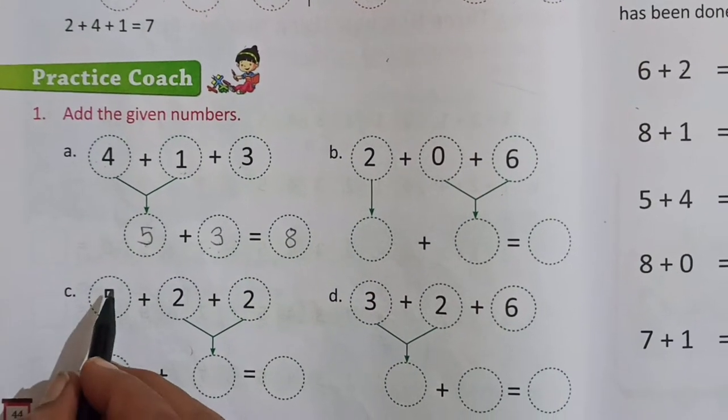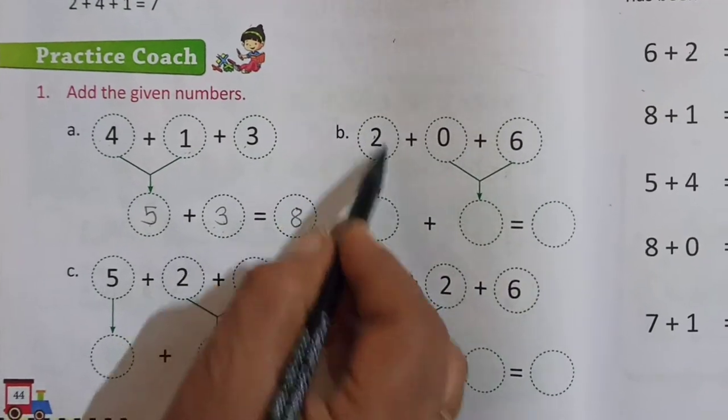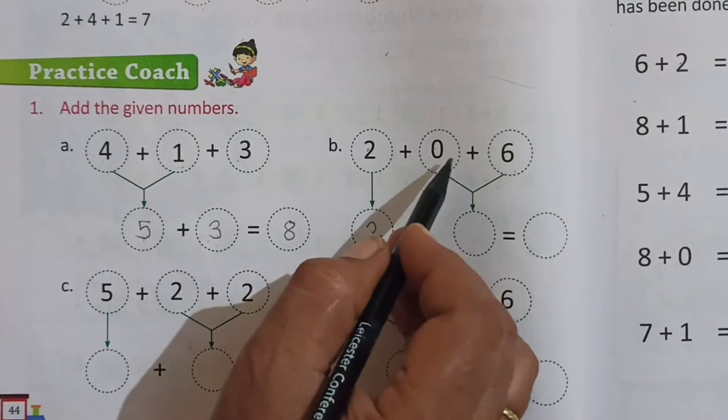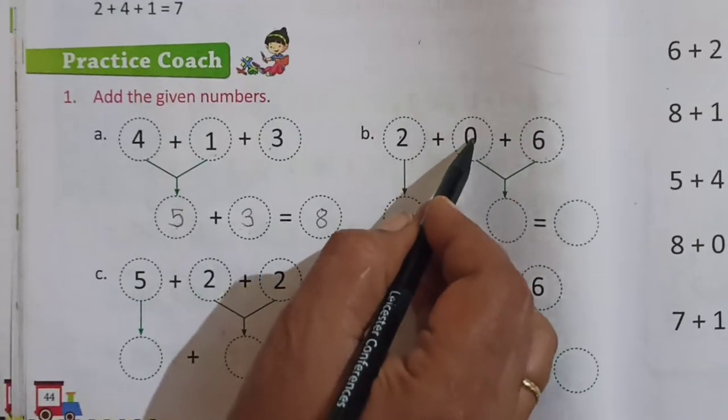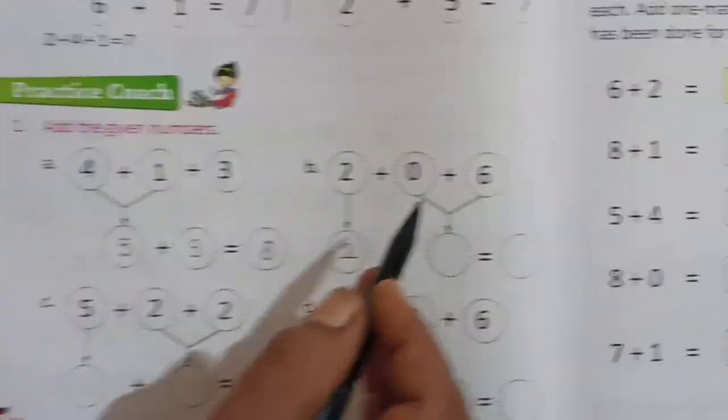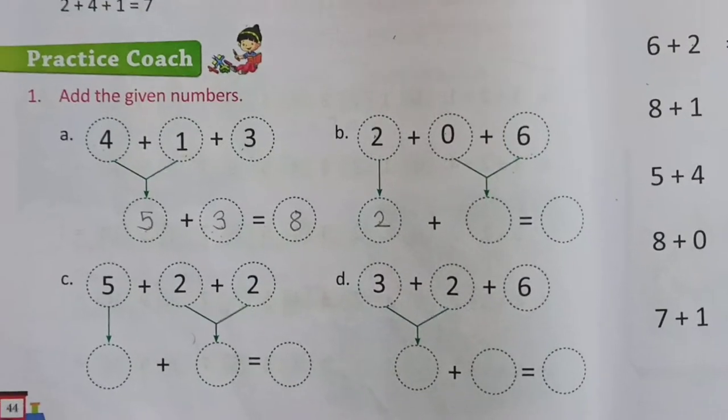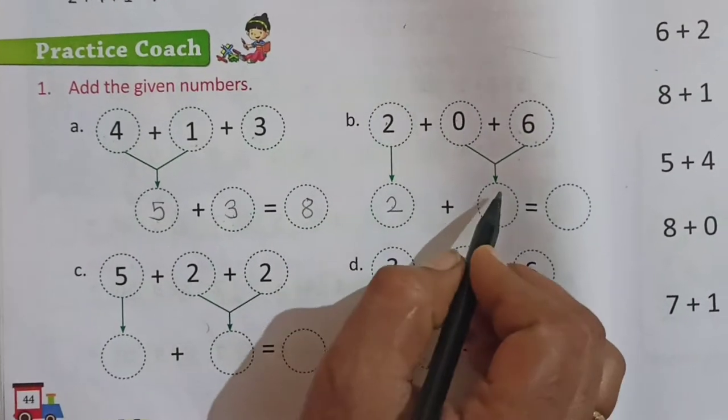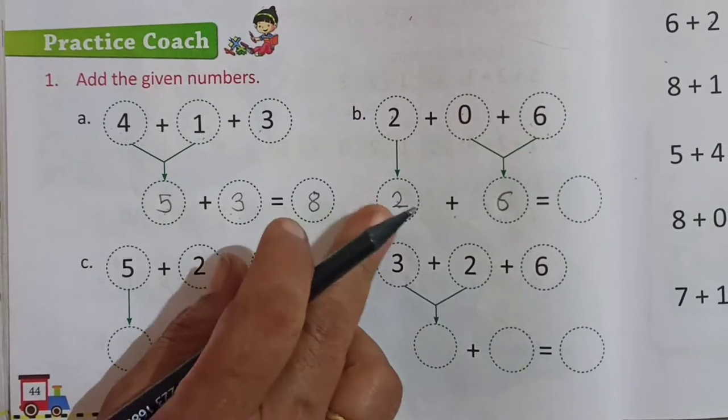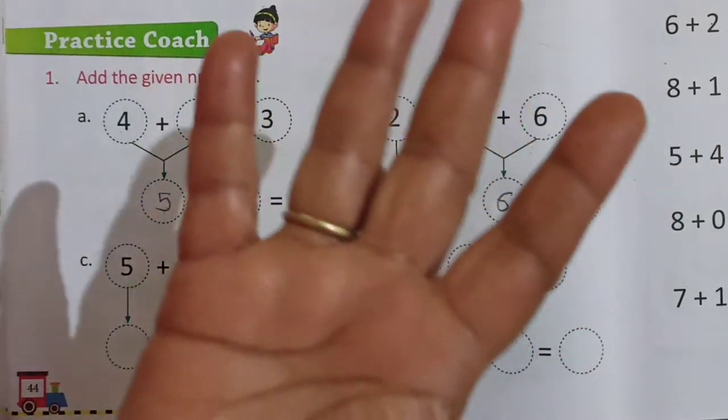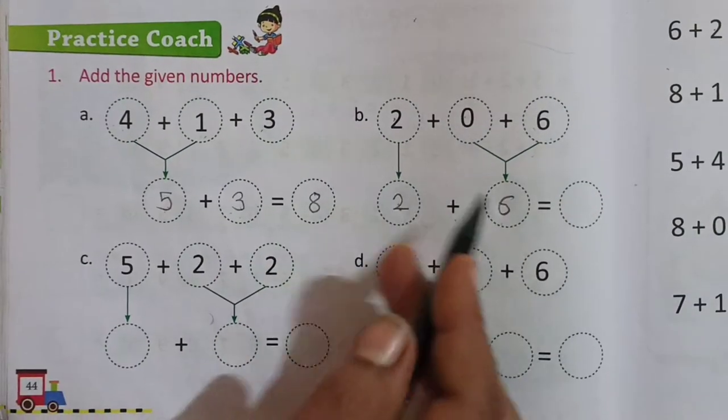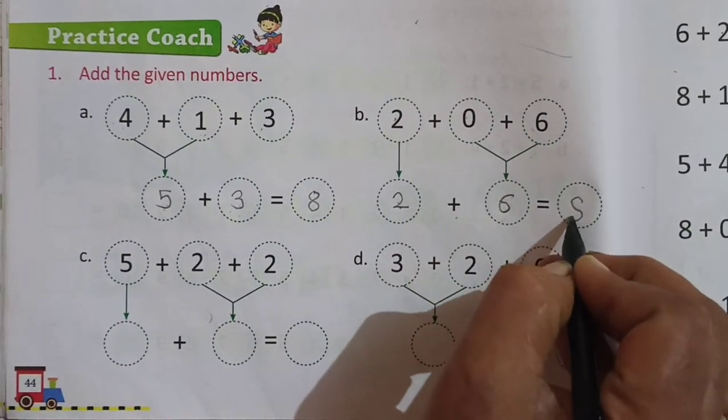Then here in B, 2 we have to write as it is. And then 0 plus 6. You know children, 0 plus 6 means any number plus 0, or 0 plus 6, we will get number 6. And then 2 plus 6. After 2, we have to add 6: 2, 3, 4, 5, 6, 7, and 8. So 2 plus 6 is equal to 8.